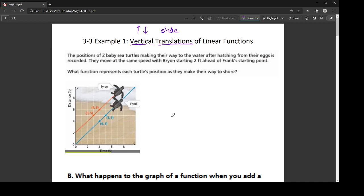So this section actually opens up with a video, which is an example involving two baby sea turtles. And so they're moving at the same speed, but Byron is ahead of Frank, the other turtle. And so they want to know which function represents each turtle's position as they make their way to shore.